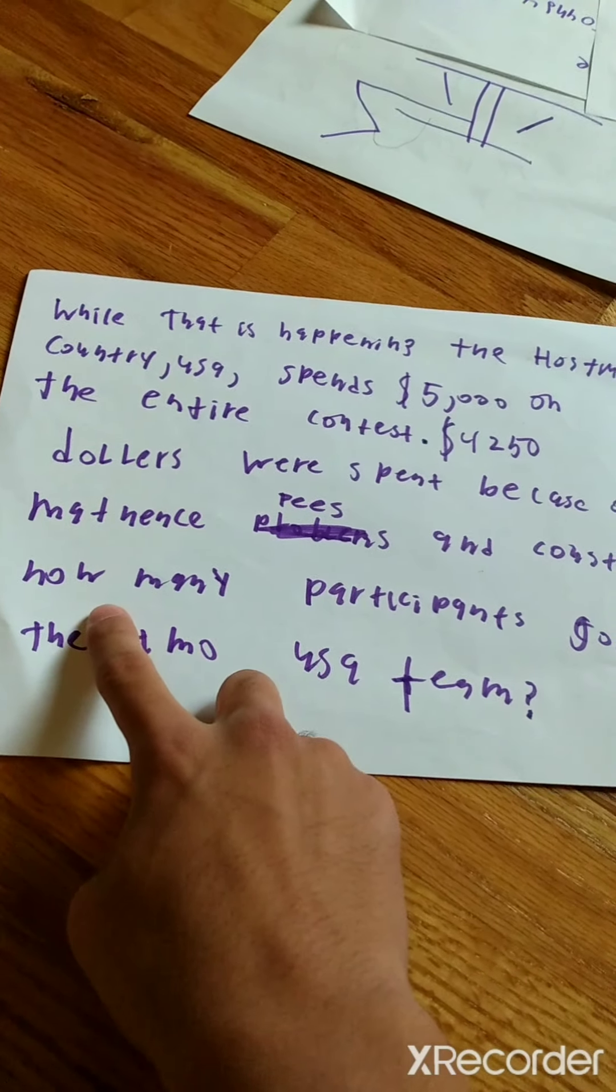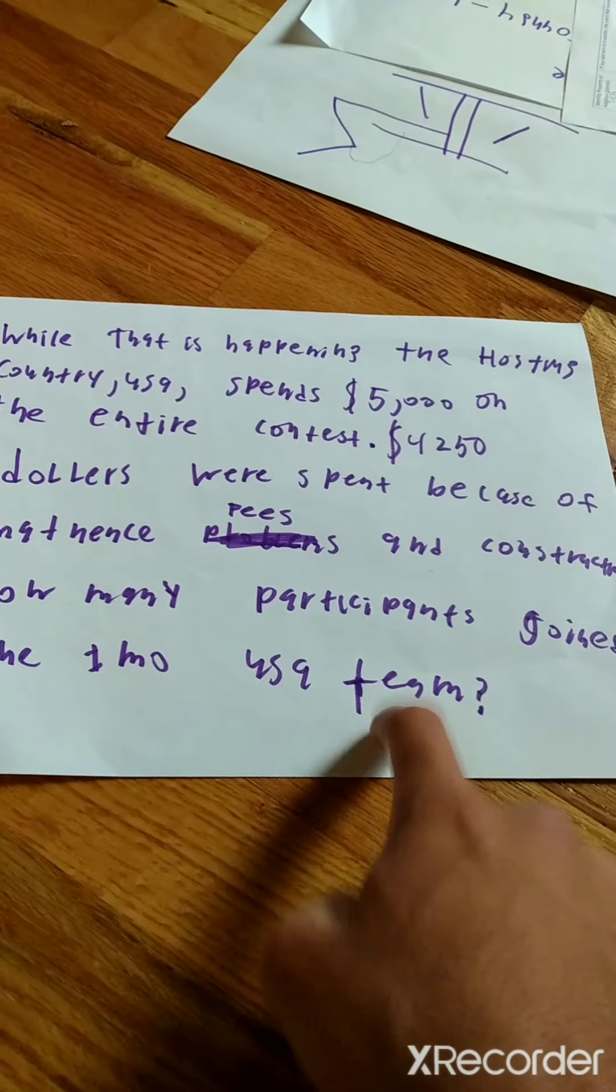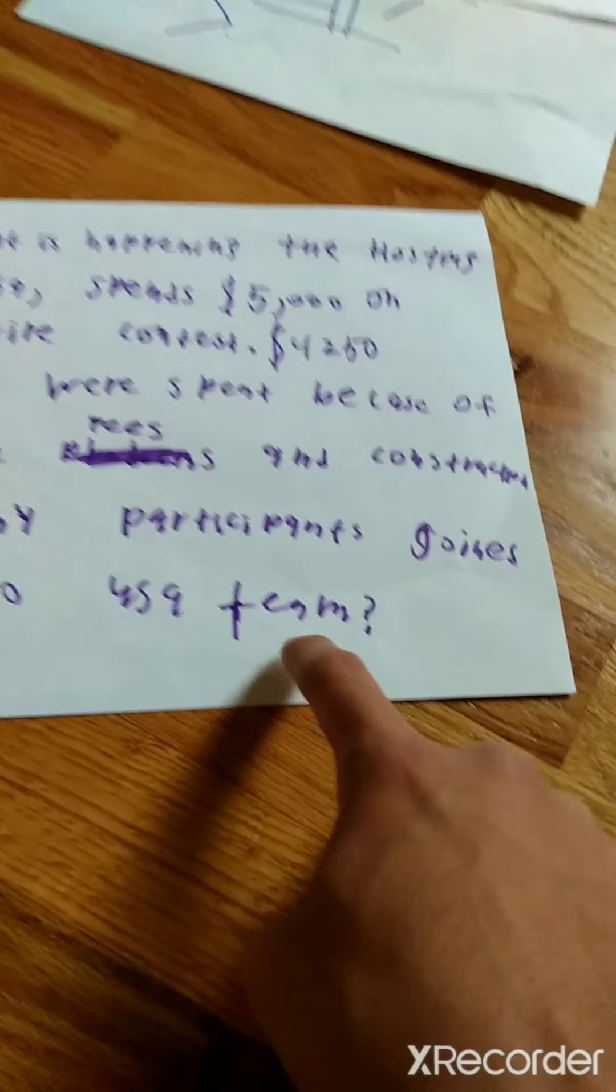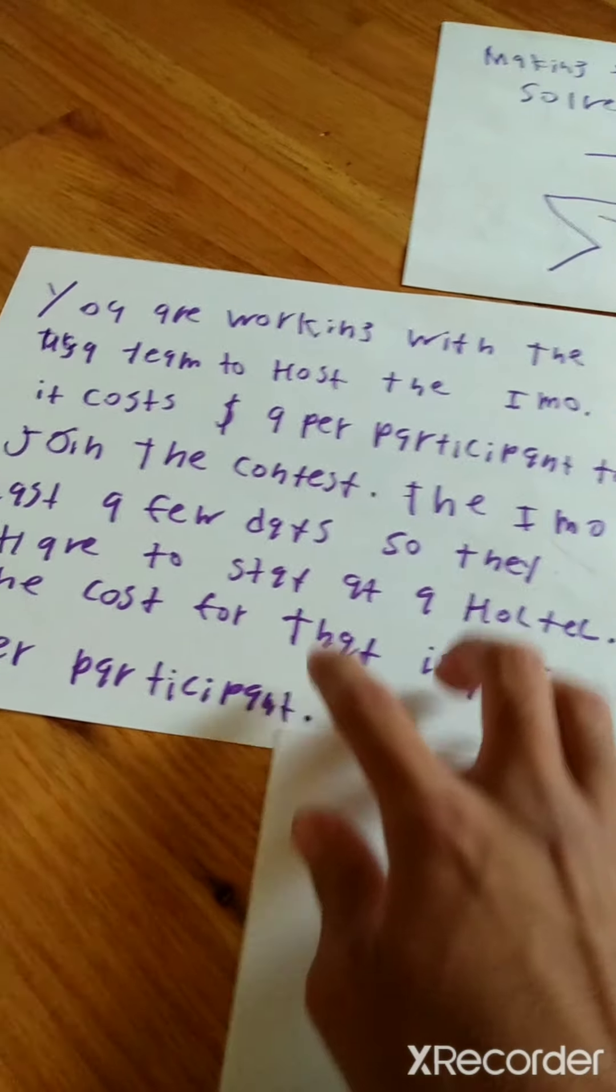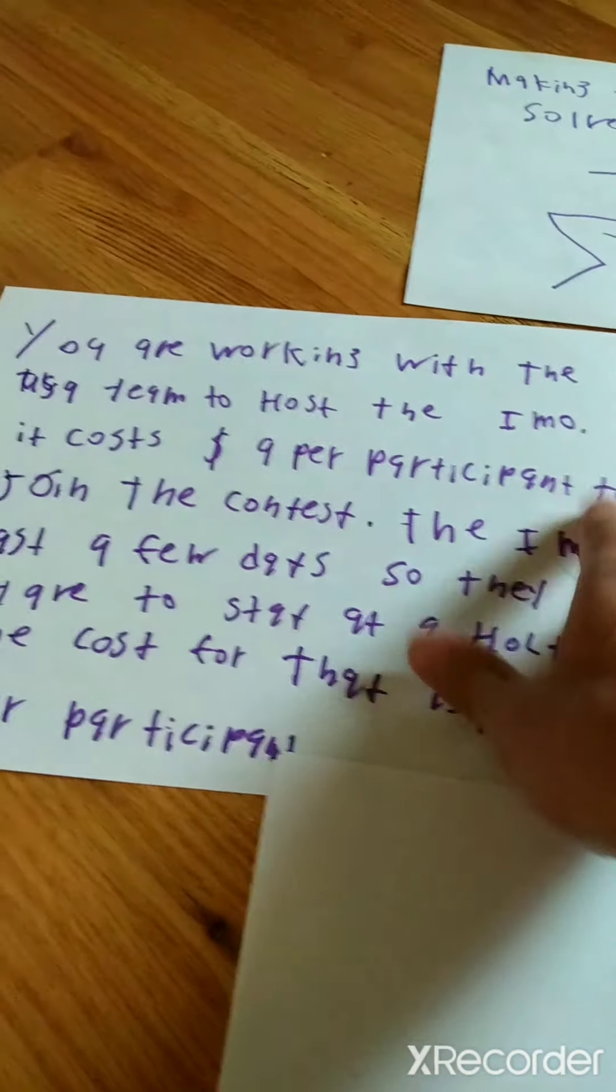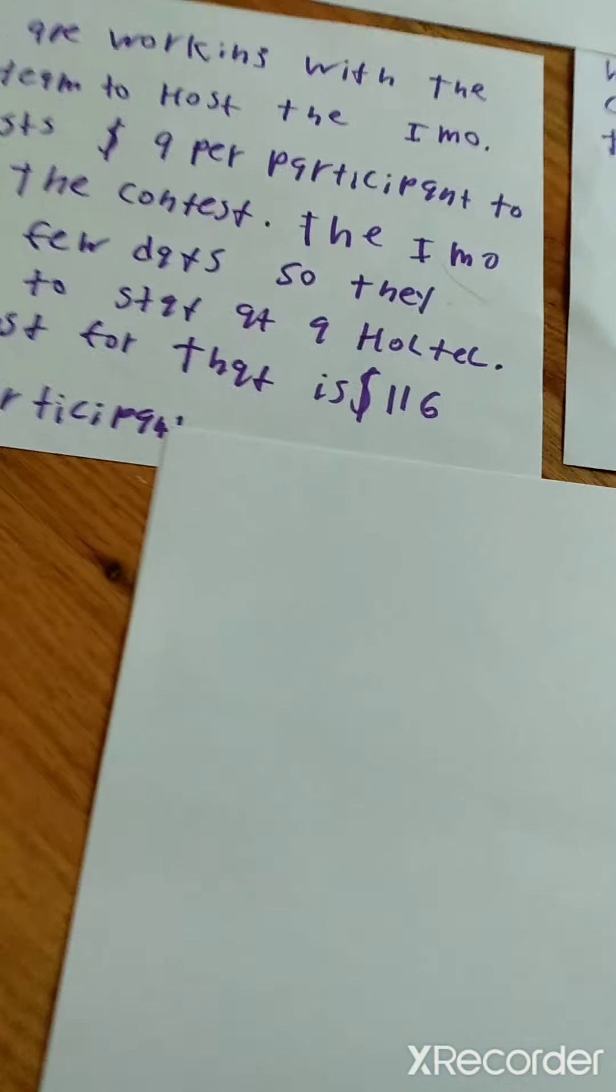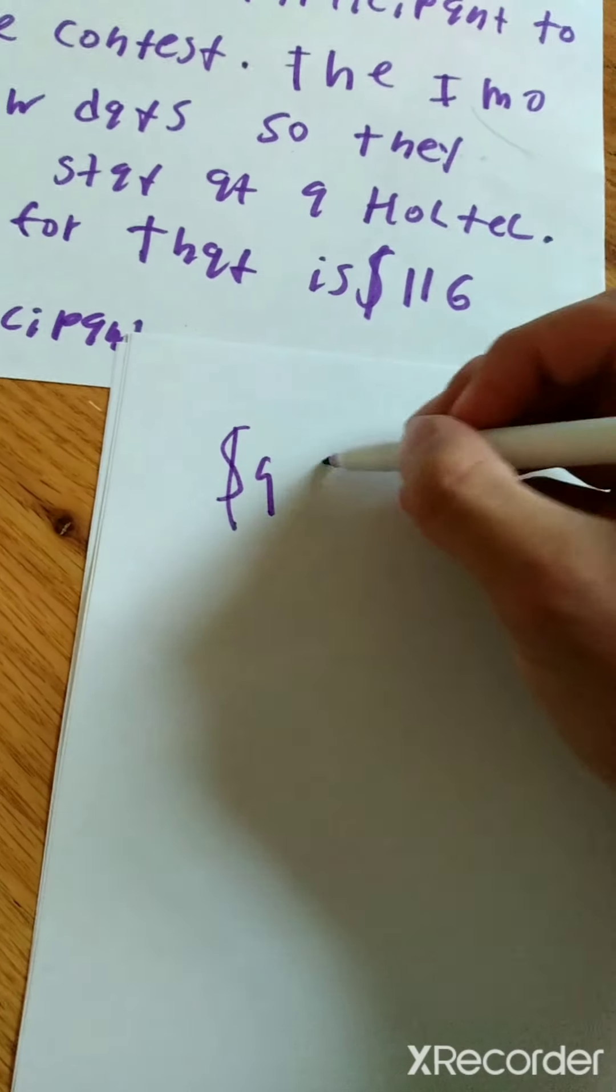And what we're trying to calculate is how many participants joined the IMO team. So how many people joined the IMO USA team? So let's start on the first page. It says that it costs $9 per participant to register into the contest. So pretty much we're going to say $9 per participant.